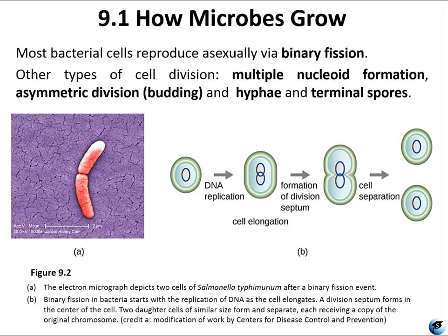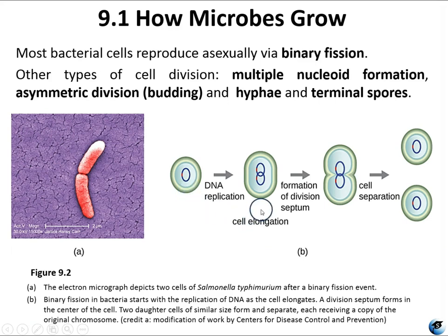We're looking at microbial growth. Binary fission is asexual reproduction. The cells are dividing — what happens first is the genetic material replicates. Then we have division or budding and then terminal spores. This figure 9-2 is a picture from an electron micrograph looking at Salmonella species. The first thing that has to happen before reproduction is replication of DNA. Then a septum forms in the center of the cell, and you have two daughter cells similar in size to each other and to the mother cell. That essentially is the basics of binary fission.